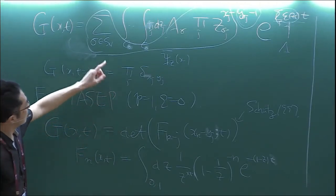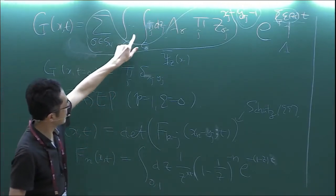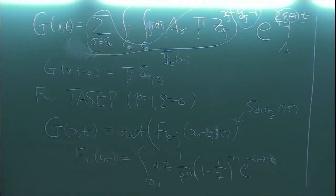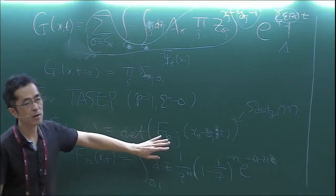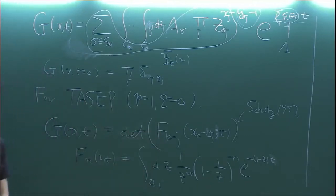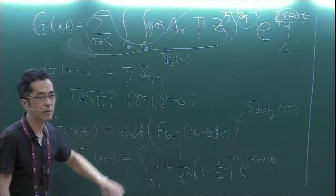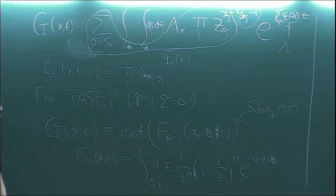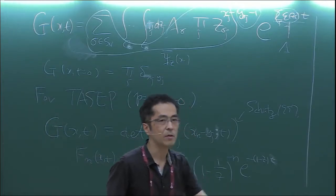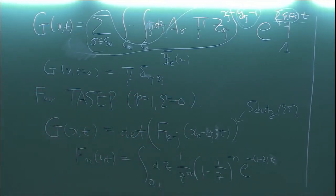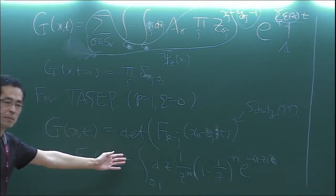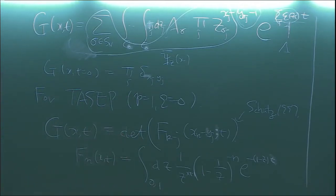Of course, we have to completely verify this integral and whether it gives the correct initial condition. Once we have this formula, one can check that it satisfies the required conditions: the master equation and the initial condition. For TASEP, one can again start from this expression and check this, which is written a little bit in the notes. Anyway, this is the formula for the transition probability for TASEP. And after that, we use this to arrive at the GUE formula.